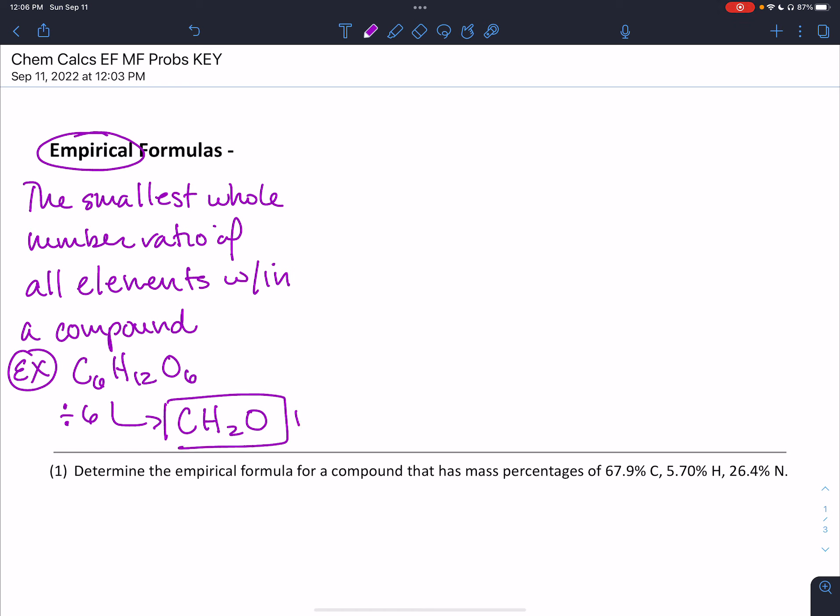This would be our empirical formula. We're going to have another video that deals with the molecular formula, of which C6H12O6 is an example. That molecular formula is the way that the compound actually exists in nature.